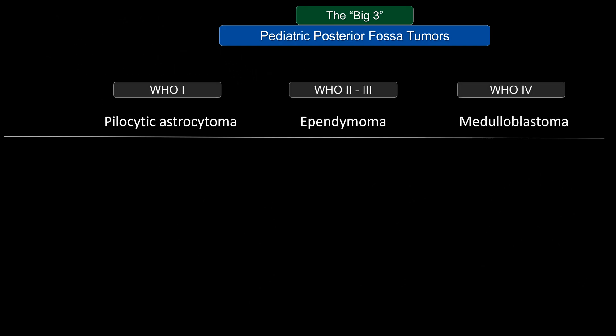There are some features that make pilocytic astrocytoma different from ependymoma and medulloblastoma. On board exams, they may ask you about different grades. Medulloblastoma is the most malignant type — WHO grade 4 — whereas pilocytic astrocytoma is benign, considered a WHO grade 1 tumor. Ependymoma is somewhere between grade 2 or grade 3 for anaplastic ependymoma.